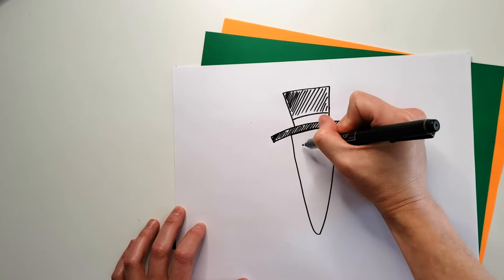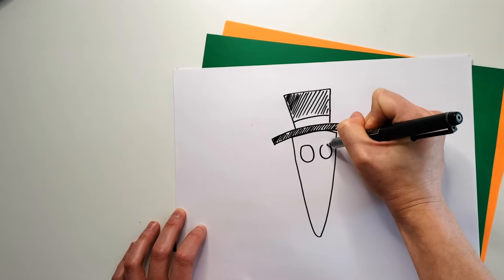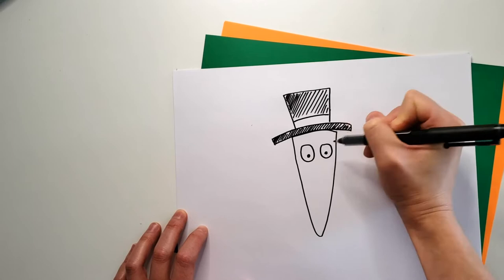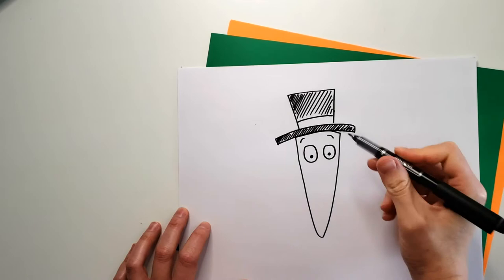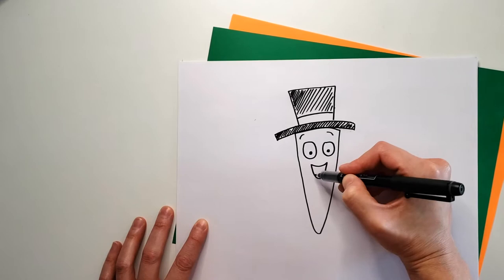So now this carrot needs a face. Let's draw some really big funny carrot eyes and now we need some pupils in the middle. Perfect. Now some eyebrows. Look at that. Now I think our carrot needs a mouth so let's do a line like this, a little curvy line and then one more curvy line like that, and then a little carrot tongue. And that's almost it.